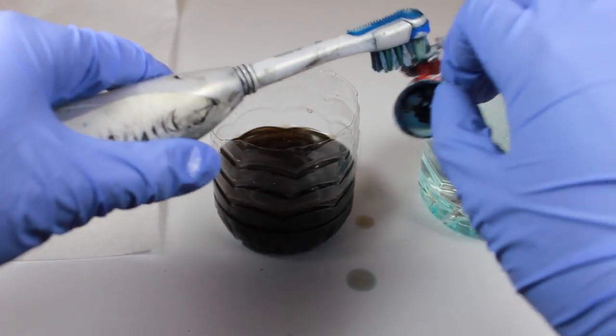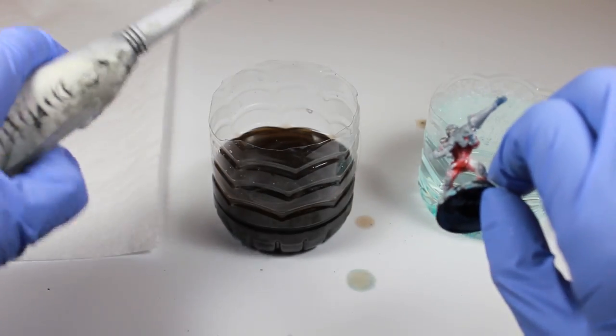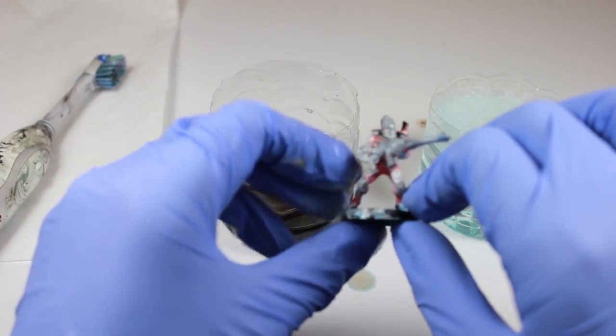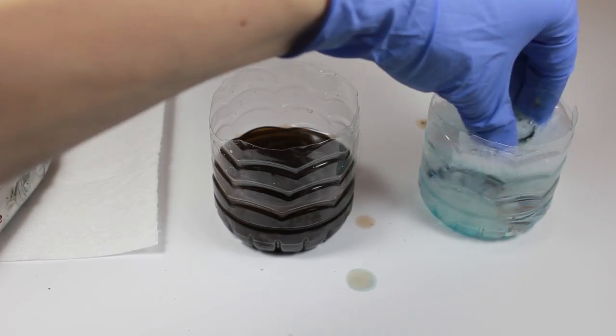SuperClean can be bought in a lot of places. You can get it from Ace Hardware, or you can get it from Walmart. That's where I got mine.